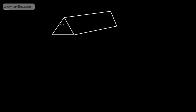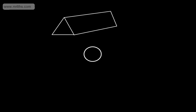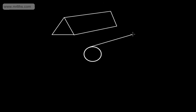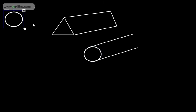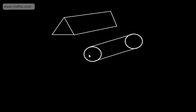Wherever I cut it, we have this constant cross-section. Another example might be one of the old Smarties tubes. One of the old Smarties tubes was circular on the end, and we ended up with a cylinder. Wherever we cut this, we're going to end up with a circle. So these are two examples of prisms.